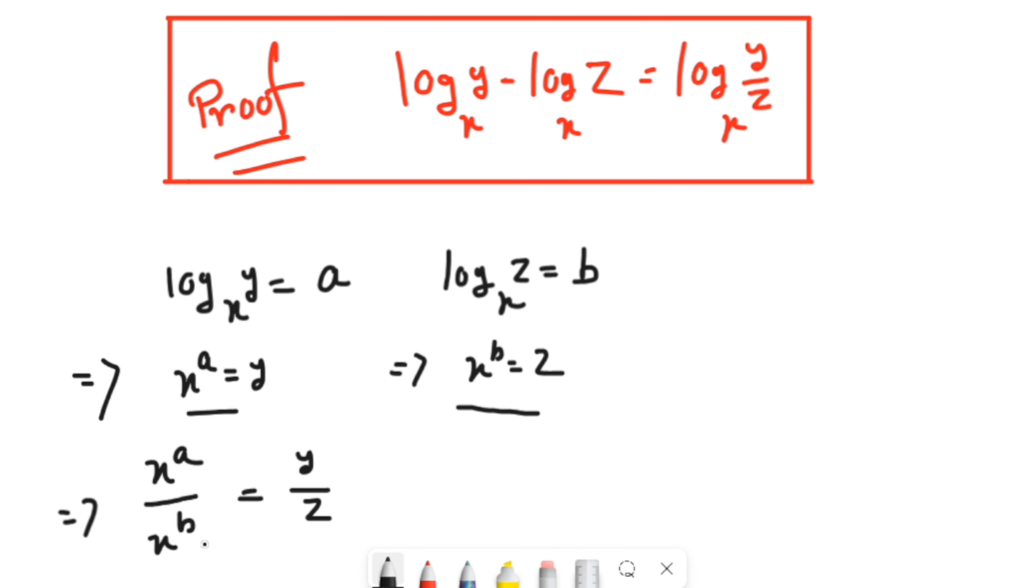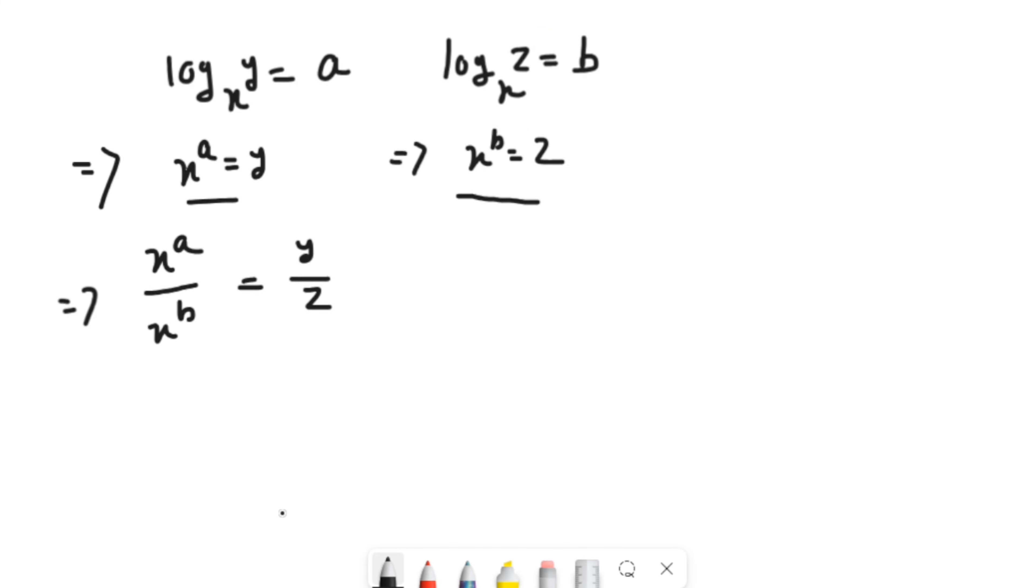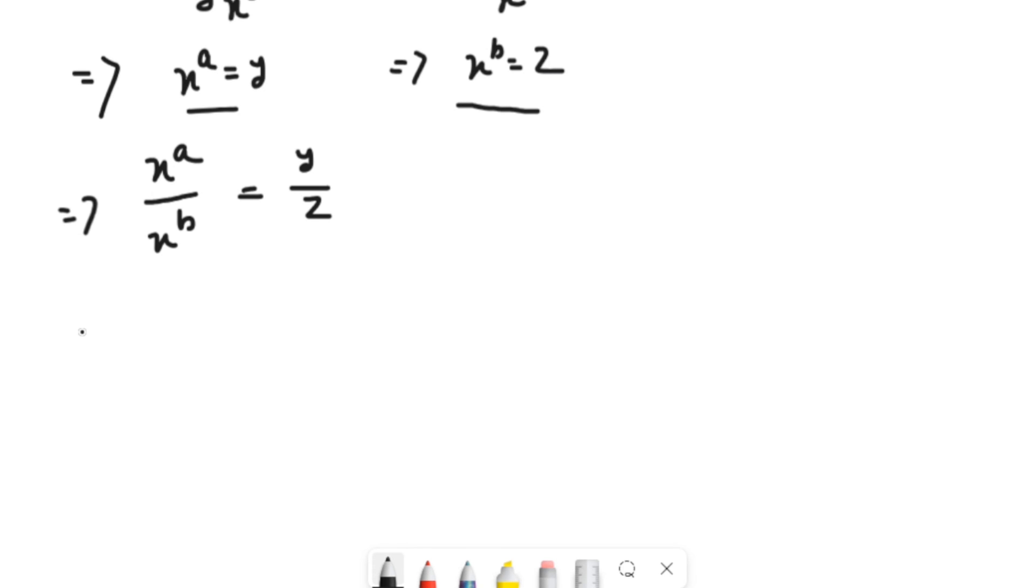Now if we write again, x to the power a by x to the power b means x to the power a minus b, right, equals y by z.